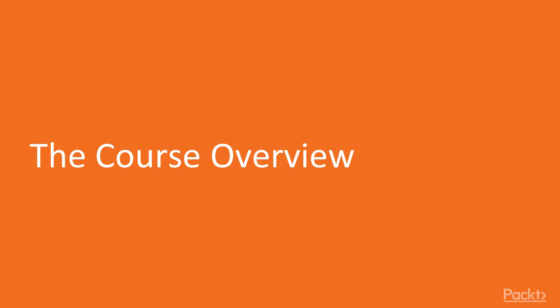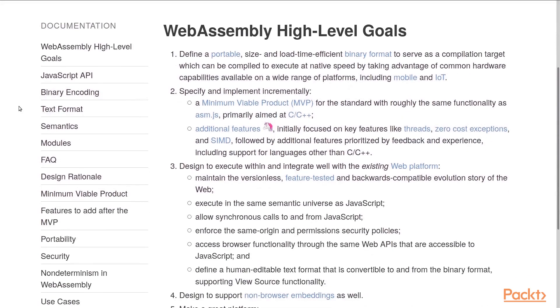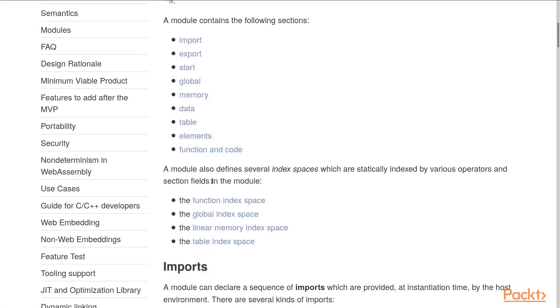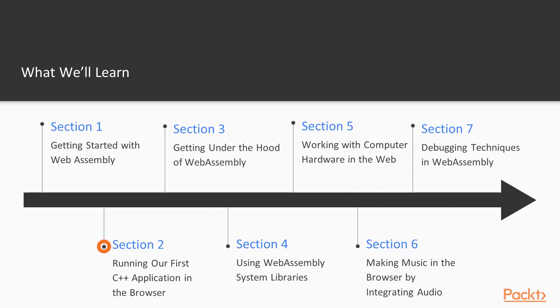In this course, I want to talk to you about WebAssembly and C++. This course has seven sections. In the first section, we'll dip our toes into the water and get started with WebAssembly — learn what it is, why it exists, and how you can use it. In the next section, it's off to the races; we're going to build our own C++ application to run in the browser.